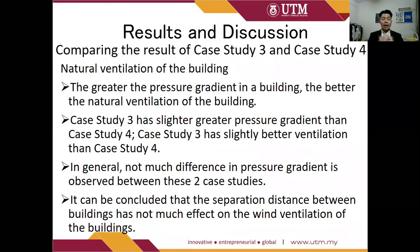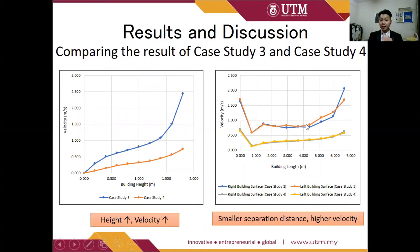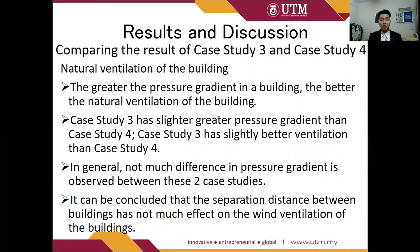Comparing case study 3 and case study 4 in terms of natural ventilation: as mentioned, the greater pressure gradient in a building, the better the natural ventilation. The results clearly show that case study 3 has a greater velocity gradient, greater pressure gradient, and thus better natural ventilation than case study 4. However, not much difference in pressure gradient is observed between the two case studies. Therefore, it can be concluded that separation distance between buildings does not have much effect on natural ventilation. However, these results are not fully conclusive because the separation distances investigated are quite limited — only 1 meter and 2 meters.